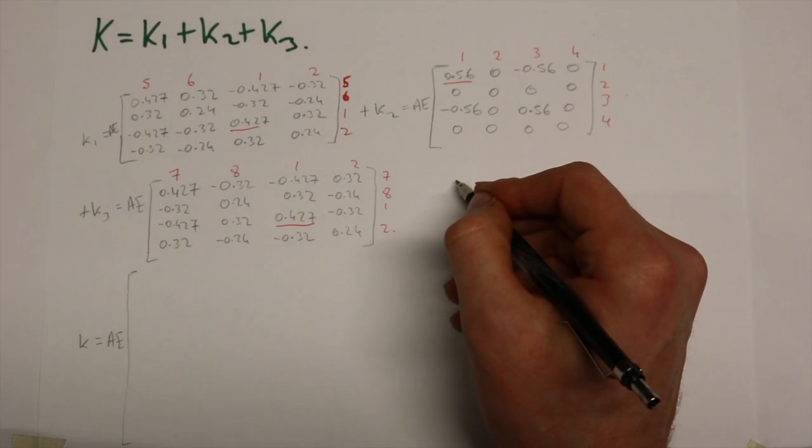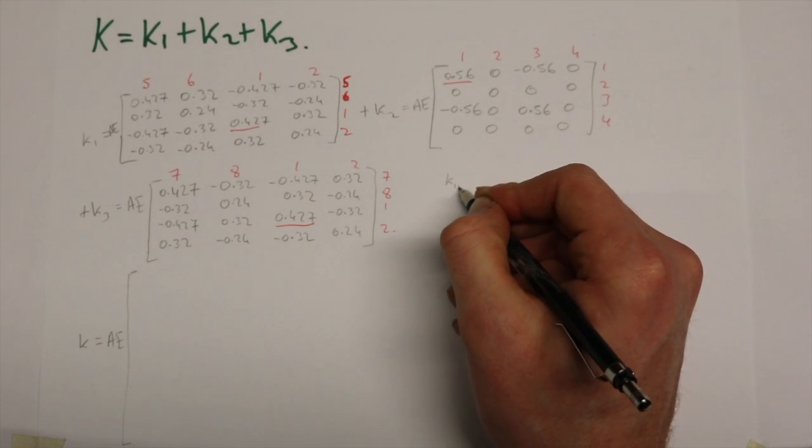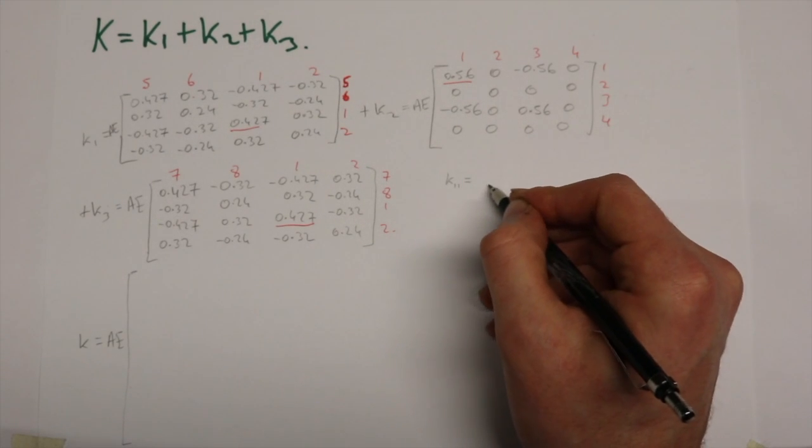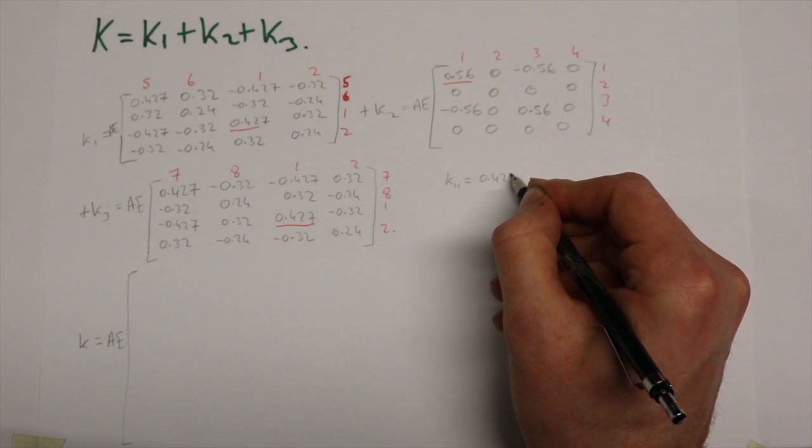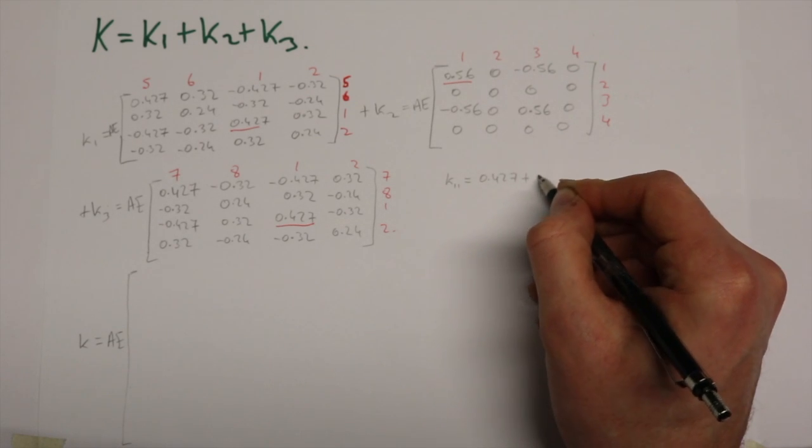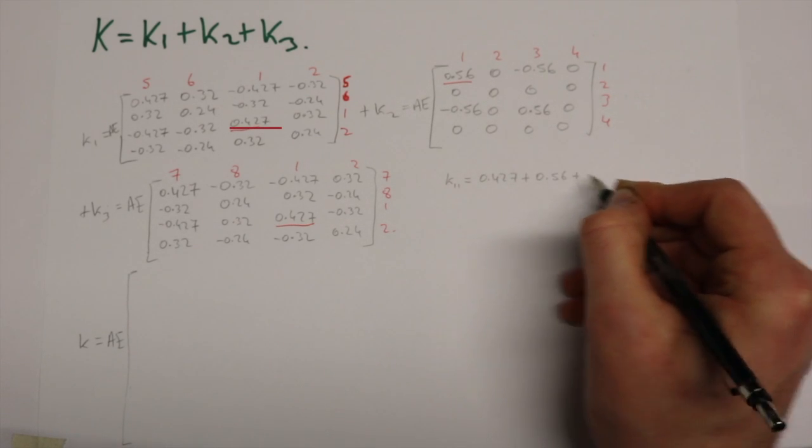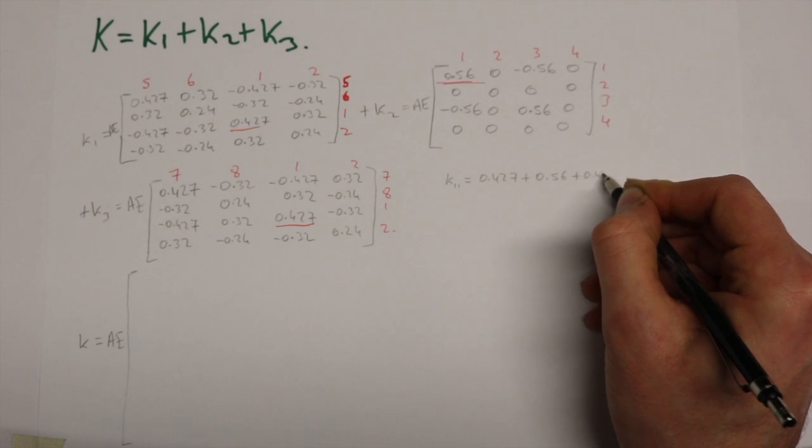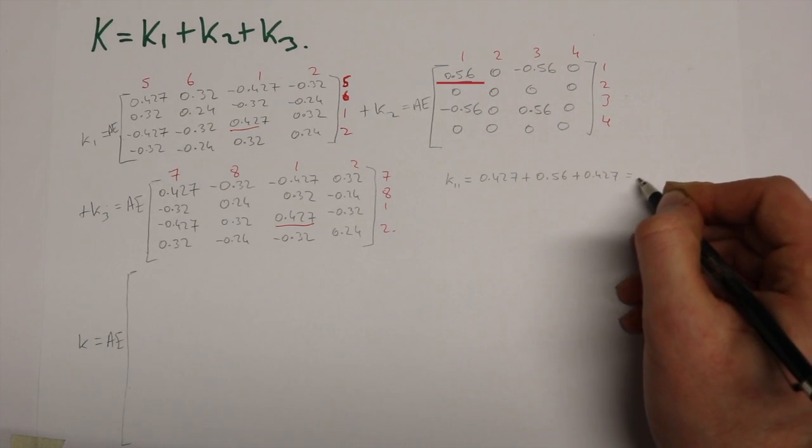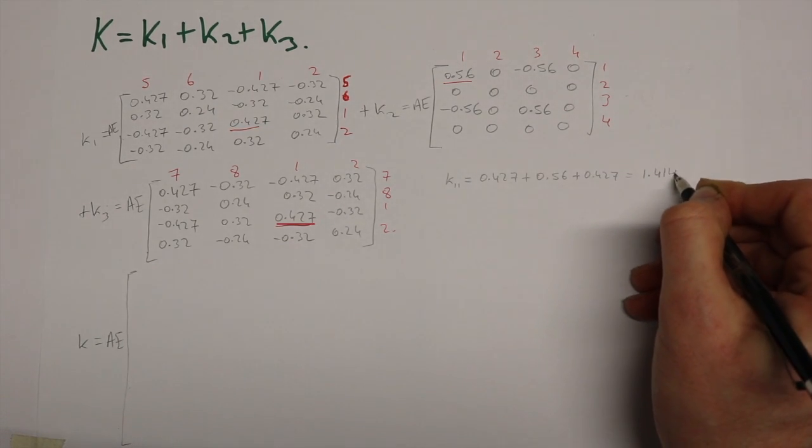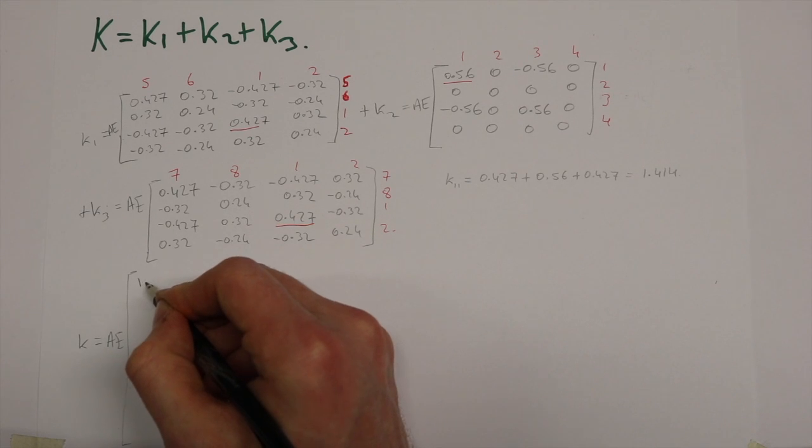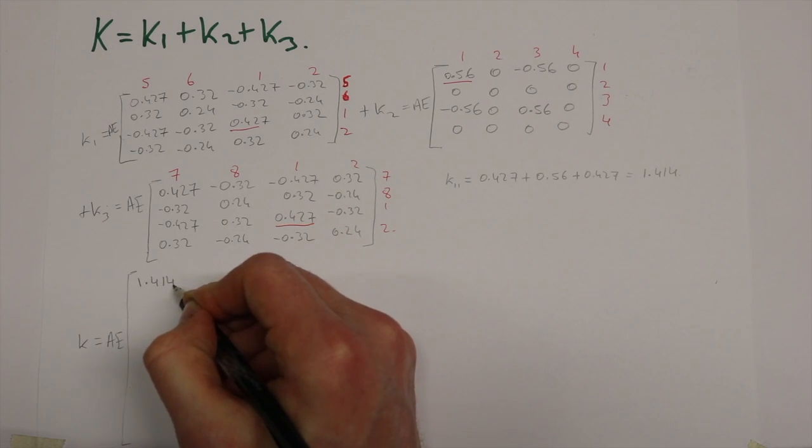So for example, K11, all we do is take the values of 1,1 from every member stiffness matrix and add them, which is 0.427 plus 0.56 plus 0.427 equals 1.414, and we put it into the structure matrix.